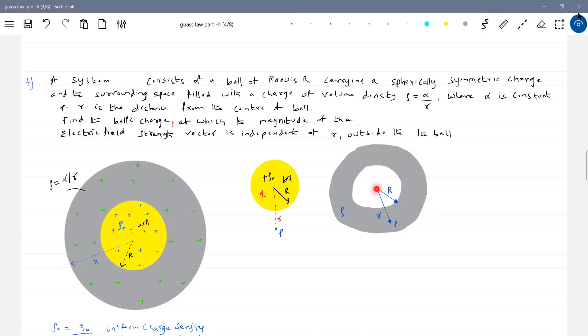Are you able to get this diagram? Because the charge density is ρ₀ inside and the surrounding space filled with a charge. So only from r greater than capital R the charge density will vary like this. The field strength at point P due to this.